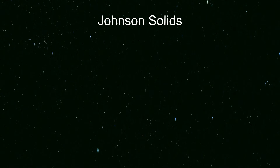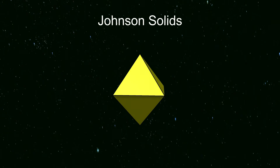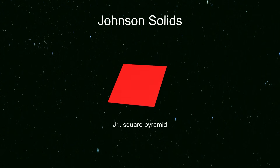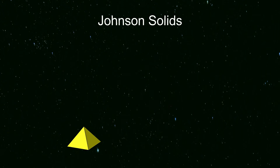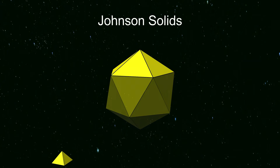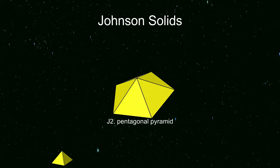All but nine of the Johnson solids can be constructed by cutting up and joining together semi-regular polyhedra. The first two are simply parts of Platonic solids. Half an octahedron is a square pyramid, the first Johnson solid. The cap of an icosahedron is a pentagonal pyramid, Johnson solid number two.